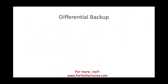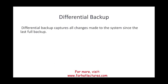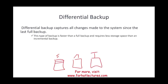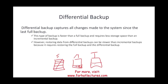The second type of partial backup is differential backup, which captures all changes made since the last full backup. On Tuesday, a differential backup includes both Monday and Tuesday data. This is faster than a full backup and requires less storage than a full backup, but more than an incremental. However, restoring from a differential backup can be slower because it requires restoring both the full backup and the differential backup. Know the differences, pros, and cons of each.